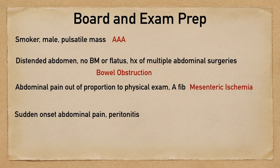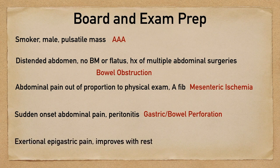If the question stem describes a sudden onset abdominal pain presentation and the examination is consistent with a peritoneal abdomen, then you want to think about gastric or bowel perforation. Lastly, if the patient has exertional epigastric pain that improves with rest, then you want to think about acute coronary syndrome.